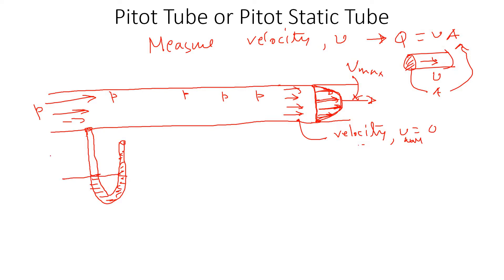Assume that is the pressure difference. Now, because there is no velocity here at the wall — the velocity is zero — this pressure difference is called static pressure. So this pressure difference is the static pressure difference, or height H_S.